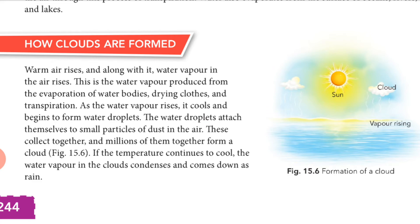When the temperature of the cloud cools down, the cloud condenses and there will be rainfall on the surface of the earth. To repeat the process: water evaporates from different water bodies, water vapor rises to a height, attaches with dust particles, millions of droplets join together to form a cloud, and when the cloud condenses, there is rainfall. This is called cloud formation.